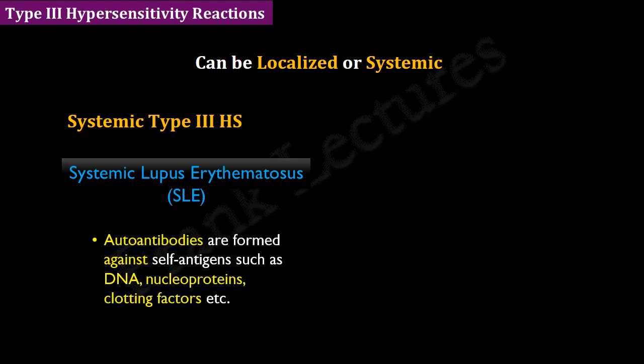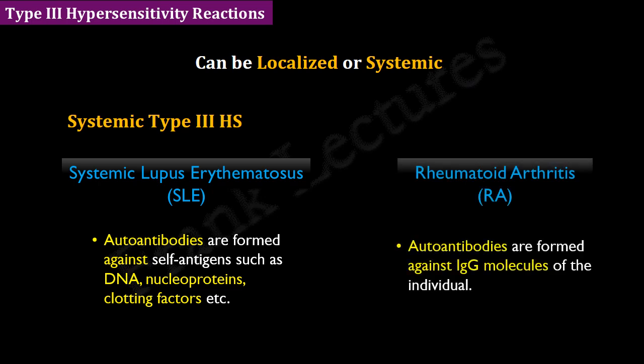In systemic lupus erythematosus, autoantibodies are produced that are directed against self-antigens such as DNA, nucleoproteins, clotting factors, and antigens present in leukocytes. Another example is rheumatoid arthritis, in which autoantibodies are produced against the patient's own IgG molecules.